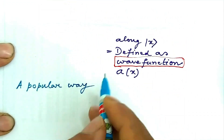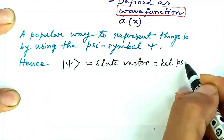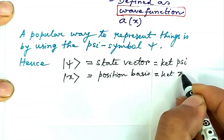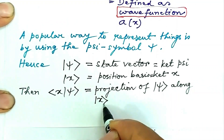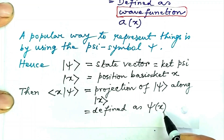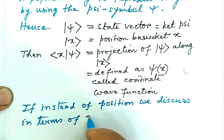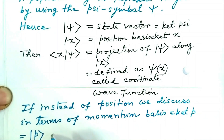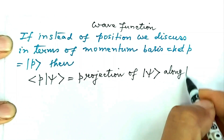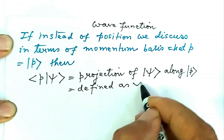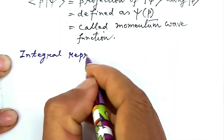A popular way to represent things is by using the psi symbol. Hence ket psi represents the state vector and ket x represents the position basis. Then the inner product bra x ket psi represents the projection of ket psi along ket x and is defined as ψ(x), called the coordinate wave function. If instead of position we discuss in terms of momentum basis, ket p, then bra p ket psi represents the projection of ket psi along ket p, defined as ψ(p), called the momentum wave function.